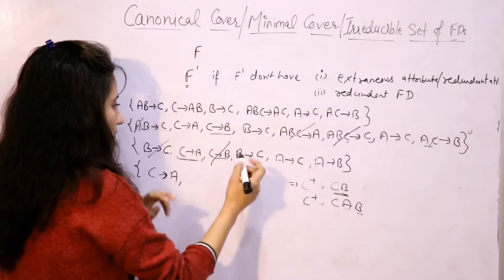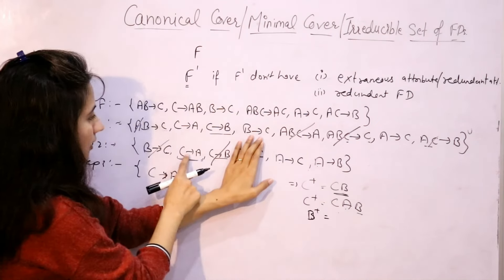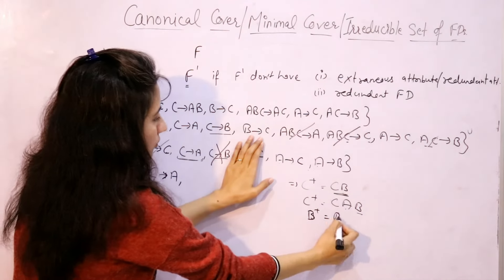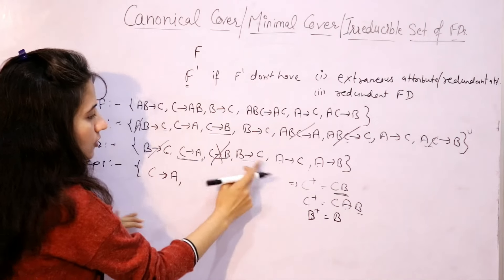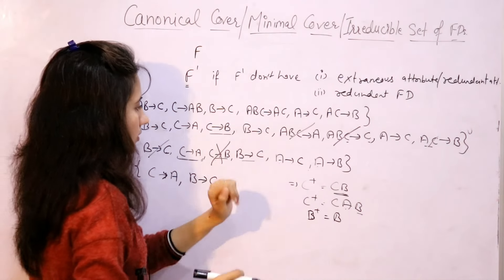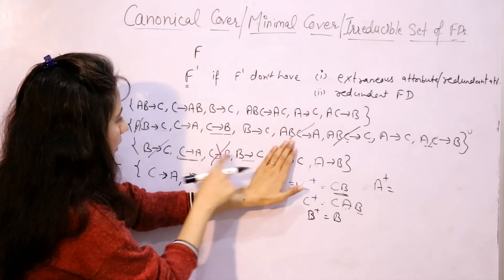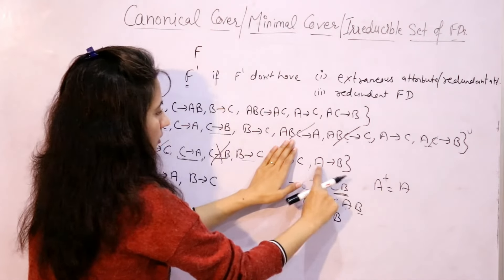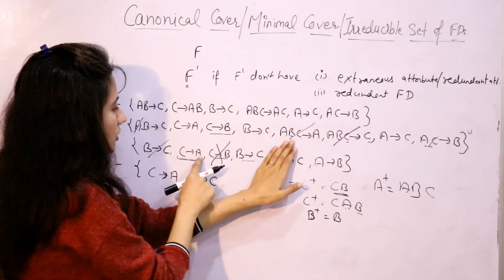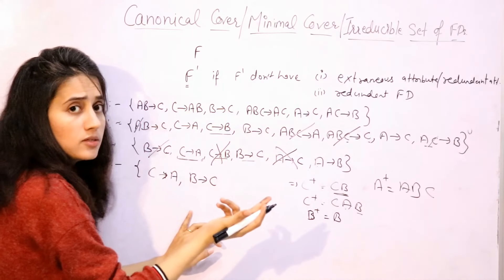Now check B → C: discard it and find B closure from the remaining. We already discarded C → B. The remaining are only two functional dependencies. In B closure, we get only B — we do not get C. So B → C is not redundant; it is essential, keep it. Now check A → C: discard it and find A closure from the remaining three. Using A → B, then B → C, then C → A — we get C in A closure. So A → C is redundant; discard it.